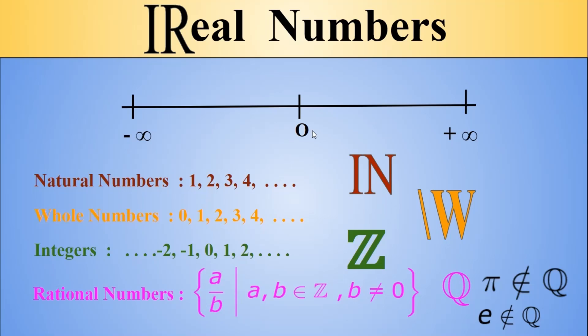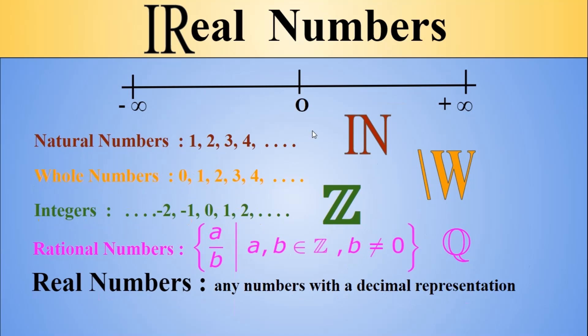Once you have all your rational numbers there, when you want to start to talk about the more complicated numbers pi, square root 2, e, pick your favorite scary number, then that is when you get to the real numbers. The real numbers is our big world or universe is where we're going to hang out for the most part.